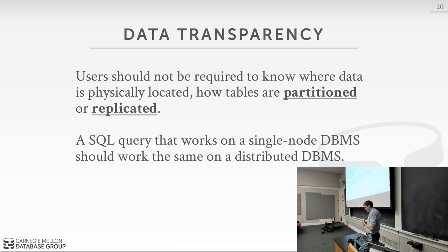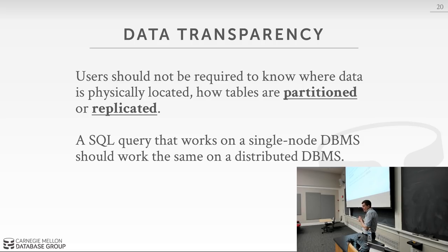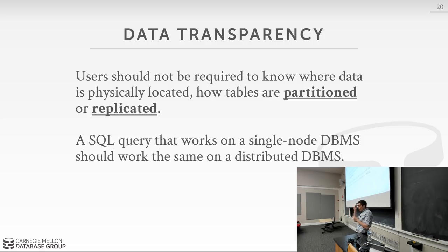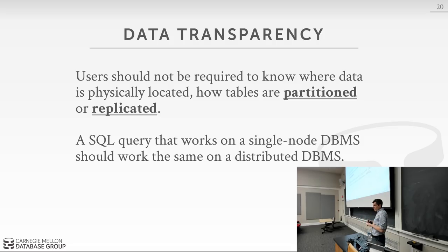The high-level goal in our distributed database — regardless of shared disk or shared nothing, homogeneous or heterogeneous — is data transparency. The application submits SQL queries without needing to know where data is physically located, how it's partitioned, or whether it's replicated. This is the same principle as parallel databases: the same SQL query should run on a single-threaded single box, a multi-threaded single box, or a distributed cluster without modification. That's one of the key benefits of a declarative language like SQL.